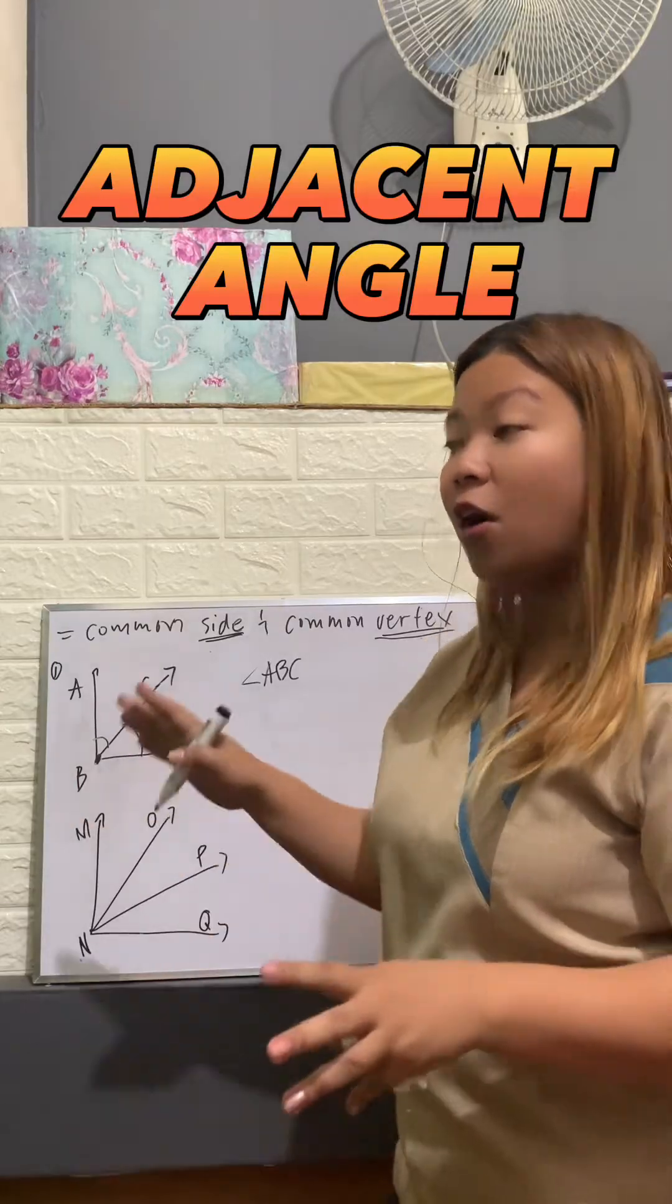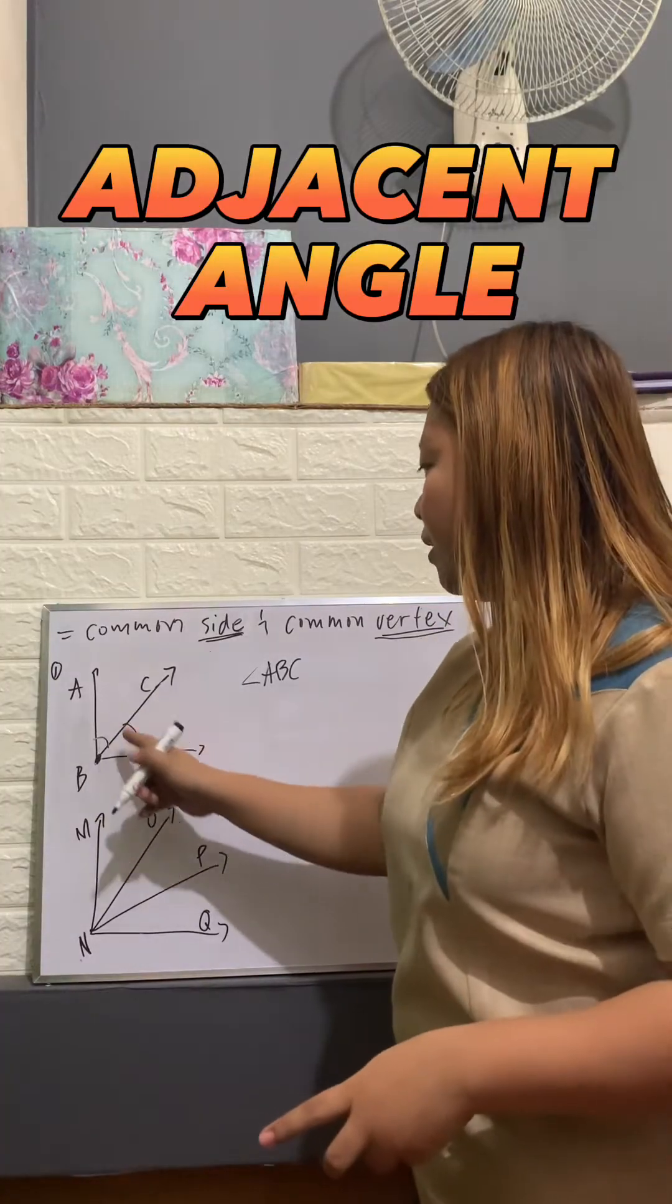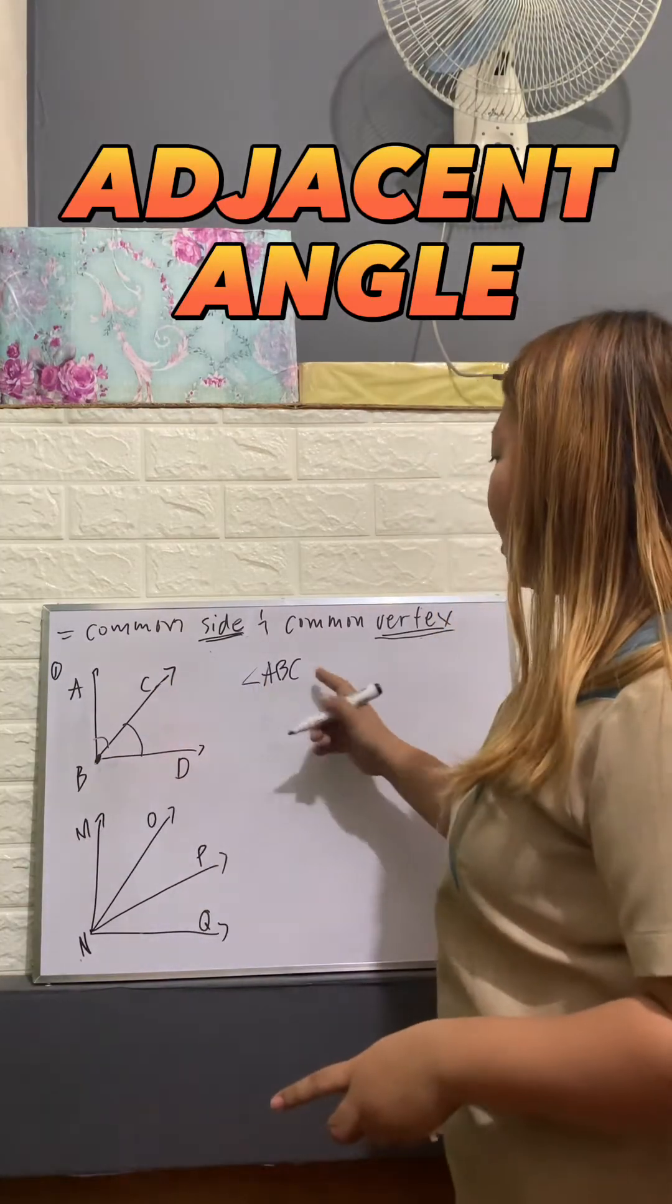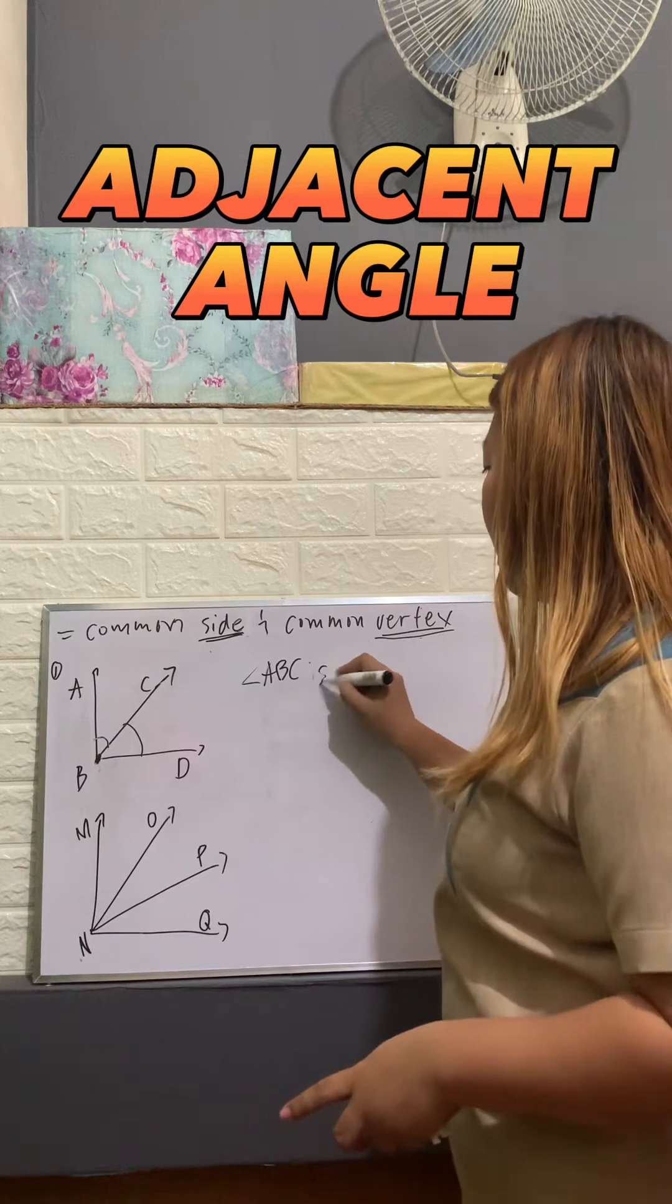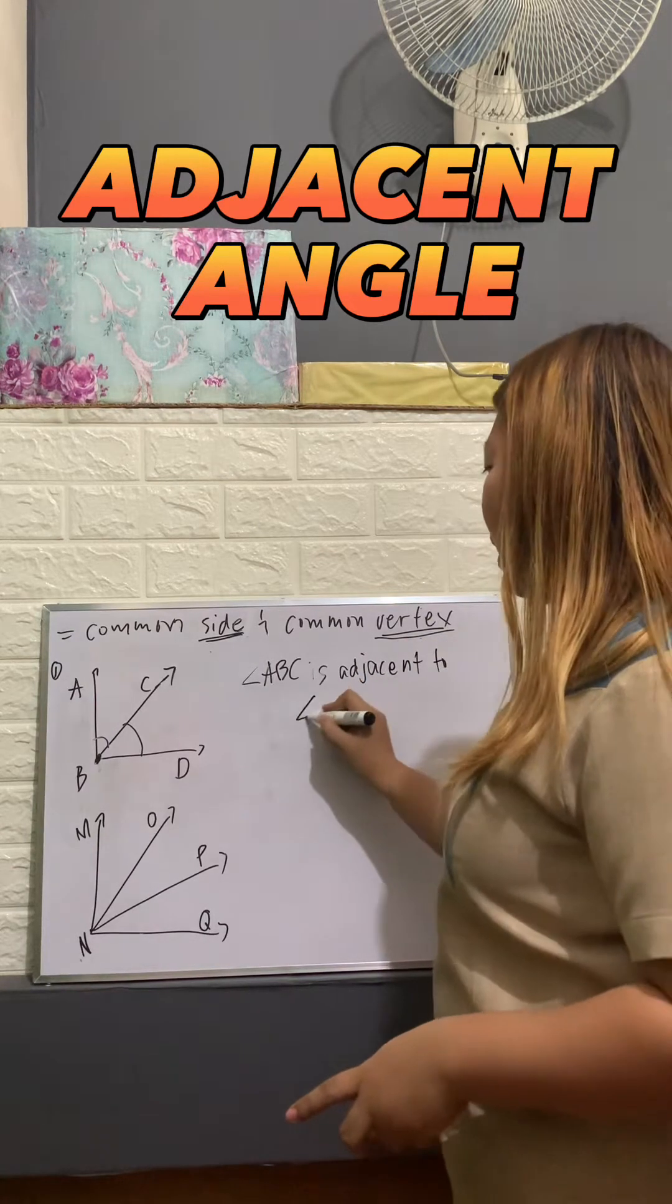So if you're going to look at the figure, we have angle CBD. So angle ABC is adjacent to angle CBD because they have a common side and a common vertex.